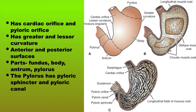The parts of the stomach are the fundus on top, the body in the middle, the antrum lower down, and to the end is the pylorus. The pylorus has a pyloric sphincter which is the muscular part and a pyloric canal.